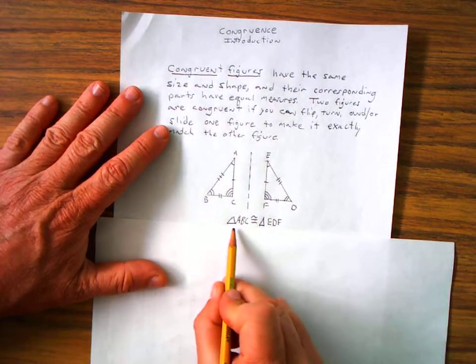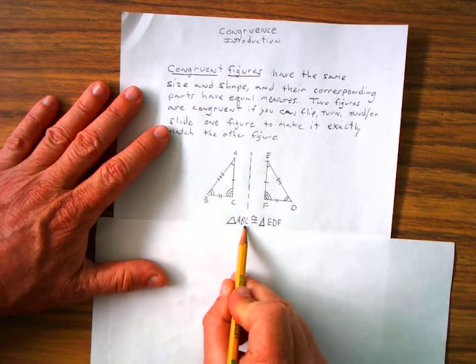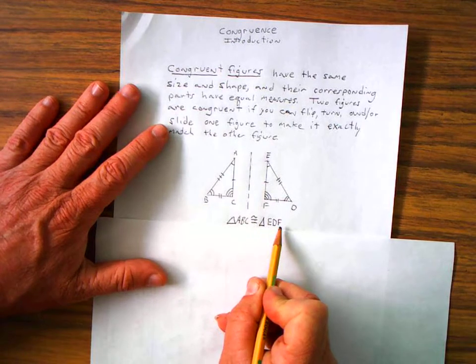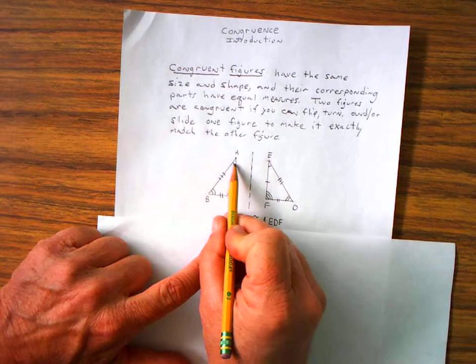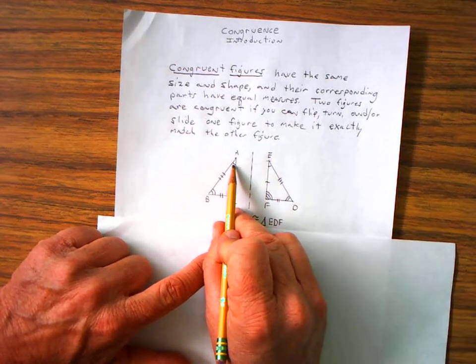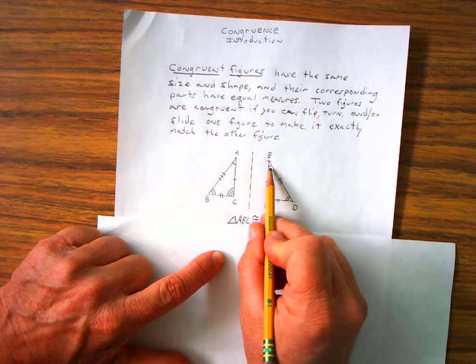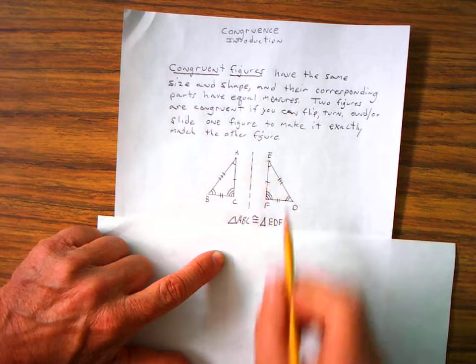This statement here reads triangle ABC is congruent to triangle EDF. Now these arcs here at angle A indicate that angle A is equal to angle E or is congruent.